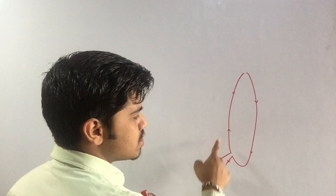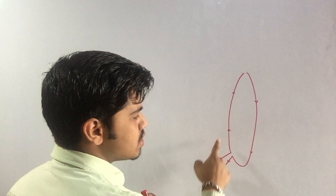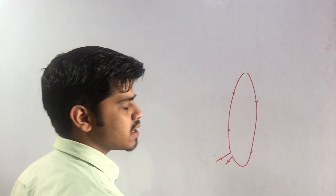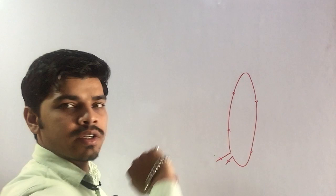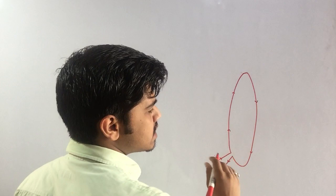This is a current carrying wire, and this is also a current carrying wire. So for this wire, if we apply the right hand thumb rule, then we get inward magnetic field on one side and outward magnetic field on the other. Similarly, if we apply it to this wire, we get inward and then outward magnetic field.